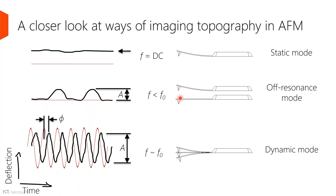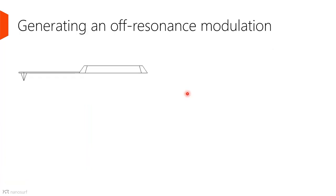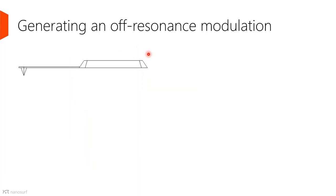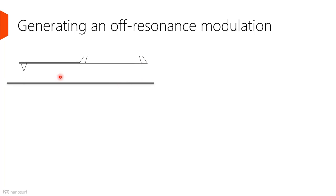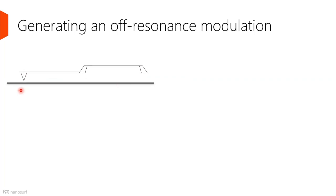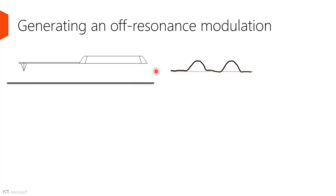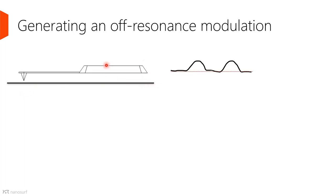How can we create a situation where the cantilever is sometimes interacting and sometimes not interacting with the surface? Historically, that's been done by just moving the cantilever up and down. When we put the cantilever in contact with the surface, the cantilever starts to interact when it's at the lower point of this oscillation, giving us this deflection signal.